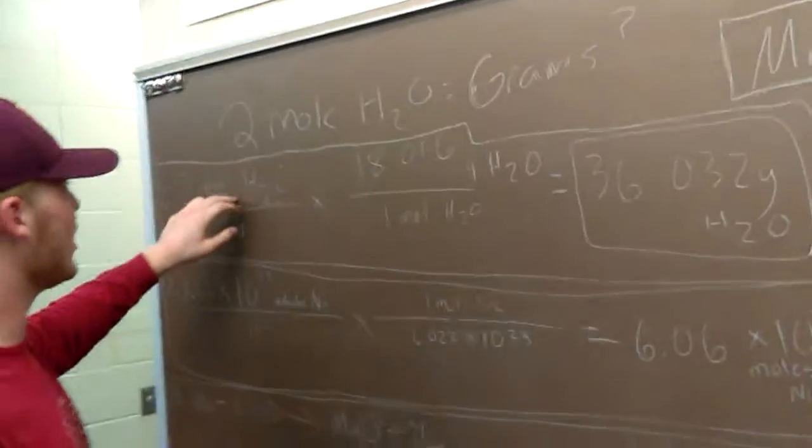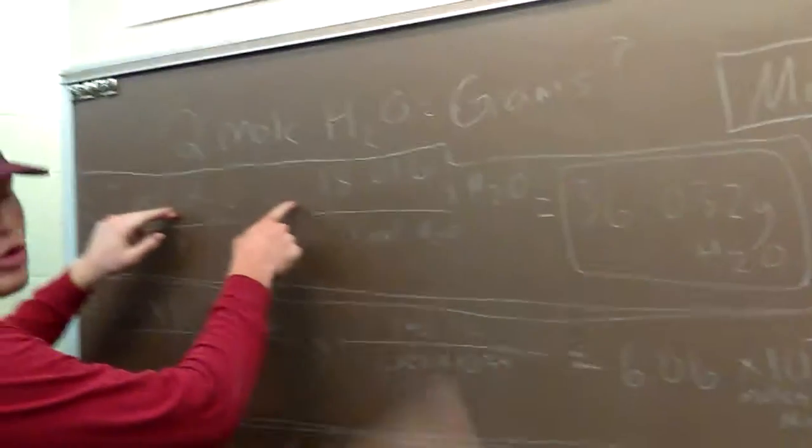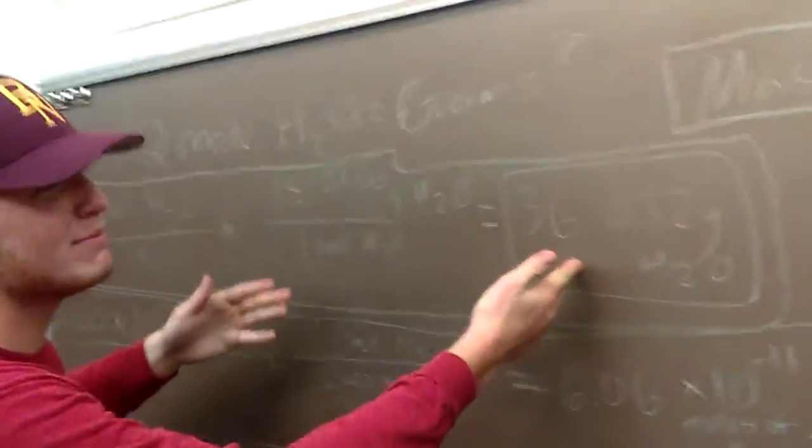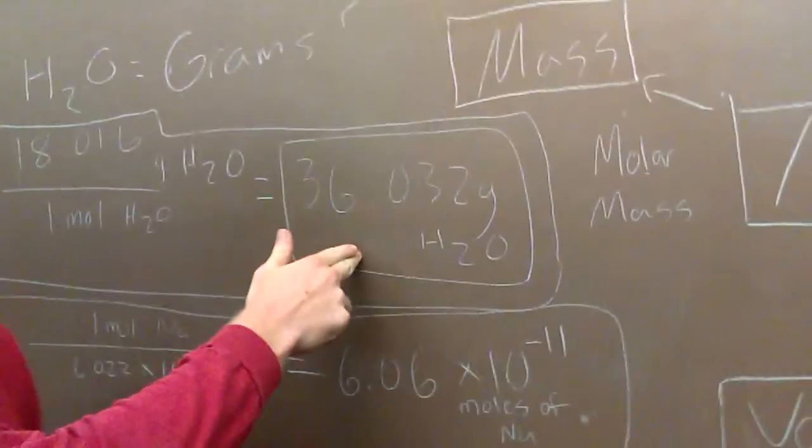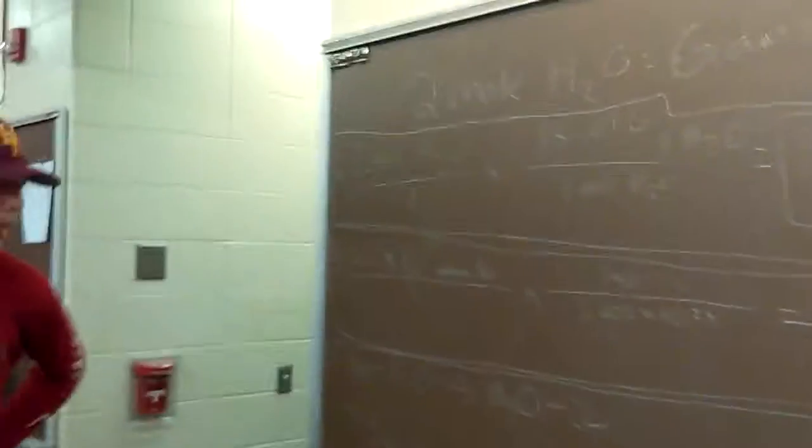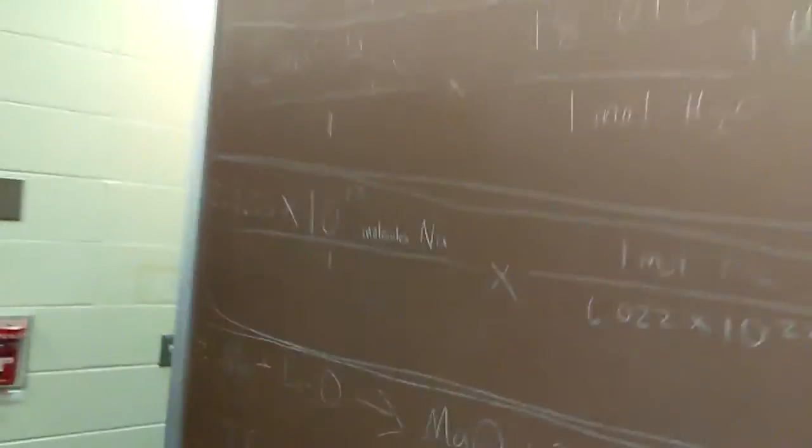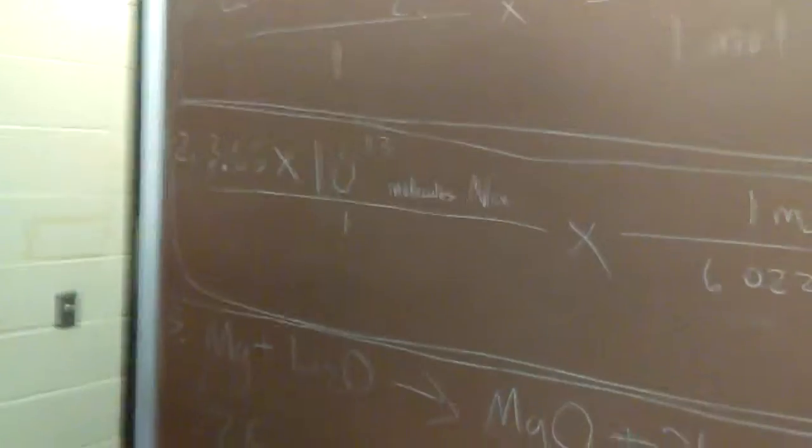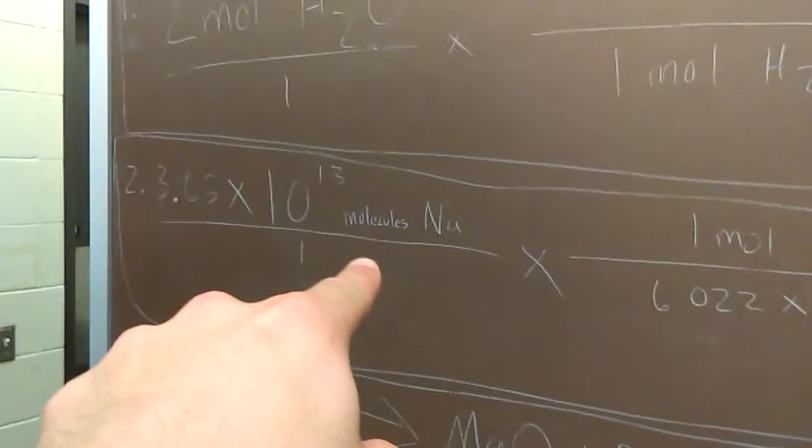And then, you just multiply the moles by the molar mass, and boom, your grams of H2O. That's it right there. That's the amount of grams in the reaction. And now, we're going to move on to example number two. Dealing with, you can see right there, molecules. So here, we are given molecules to start with, instead of moles. Show me how you do this one.